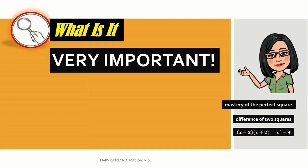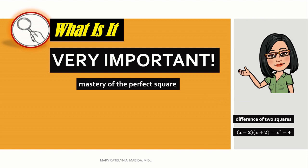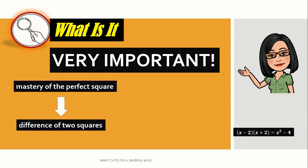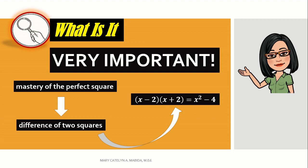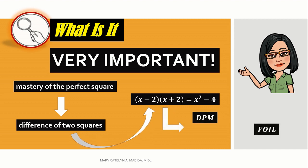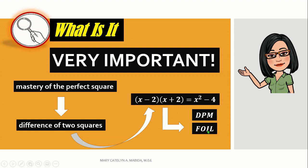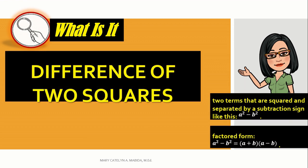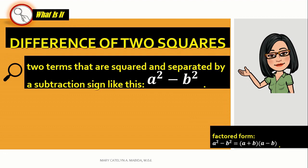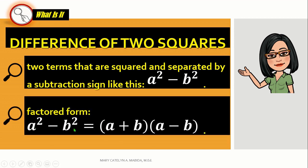What is it? Mastery of the perfect square of a number is very important in learning the new technique in factoring polynomials, which is the difference of two squares. Recall that the quantity of x minus 2 times the quantity of x plus 2 is equal to x squared minus 4 by the distributive property of multiplication, or FOIL method — first, outer, inner, last. This time, you are going to do the reverse. The difference of two squares are two terms that are squared and separated by a subtraction sign, like a squared minus b squared. It can be factored into the quantity of a plus b times the quantity of a minus b.